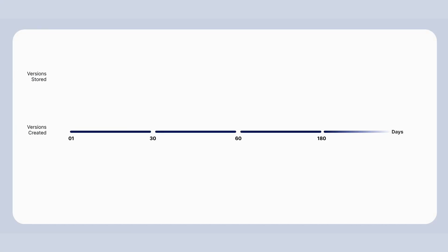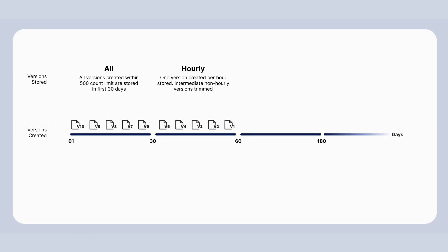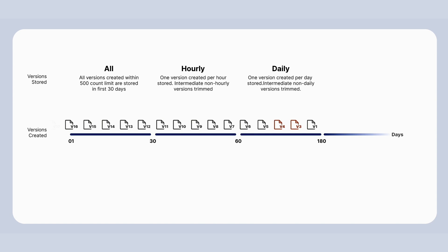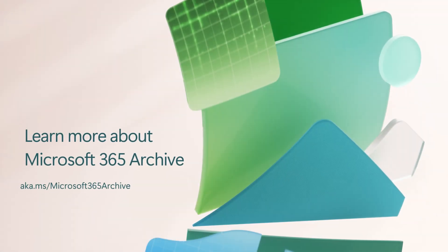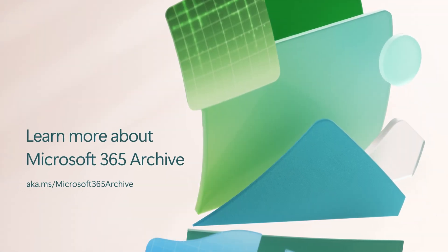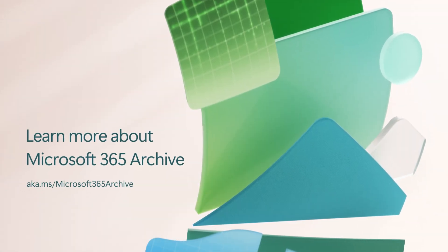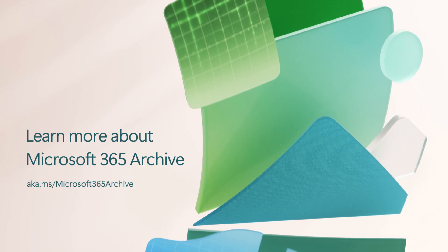With automated trimming, older, less valuable versions are thinned out over time while key versions are retained. This reduces storage footprint without compromising reasonable recoverability. Store inactive data at a much lower cost and gain greater control over your storage usage with Microsoft 365 Archive.